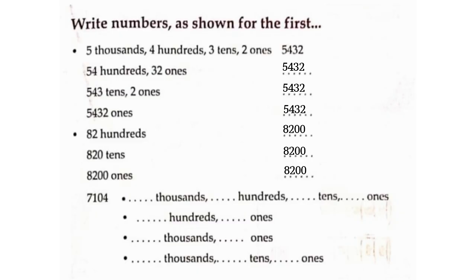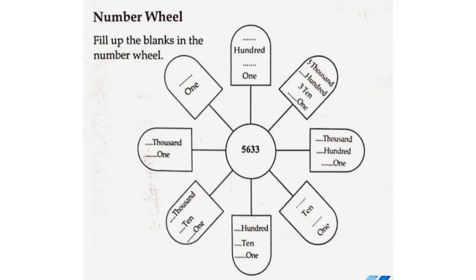Next, 7,104: broken into 7 thousands, 1 hundred, 0 tens, 4 ones. And 7,000 broken into 10 tens and 4 ones. Number V — fill up the blanks in the Number V.